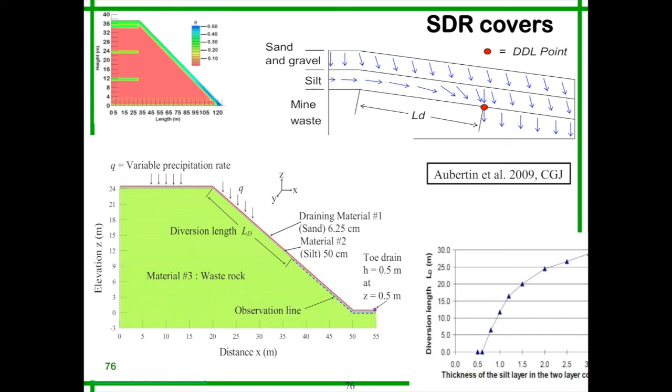The effect of sloping of cover has been investigated also for SDR type of covers. Store, divert, and release type of covers. This means that you have a cover and the goal in this case, instead of preventing oxygen ingress, is to prevent water from moving inside the waste. In this case, it would be a waste rock pile. We use the capillary barrier effect so that moisture going in will be moving along the side of the slope inside the cover instead of moving downward.